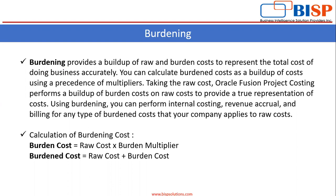These are the formulas for calculating the burdening cost. For calculating the burden cost, you have to multiply the burden multiplier by raw cost. For calculating the total burden cost, you have to add the raw cost to burden cost. Burden cost is indirect cost and raw cost is direct cost. Burden cost is the terminology used in Oracle Fusion.